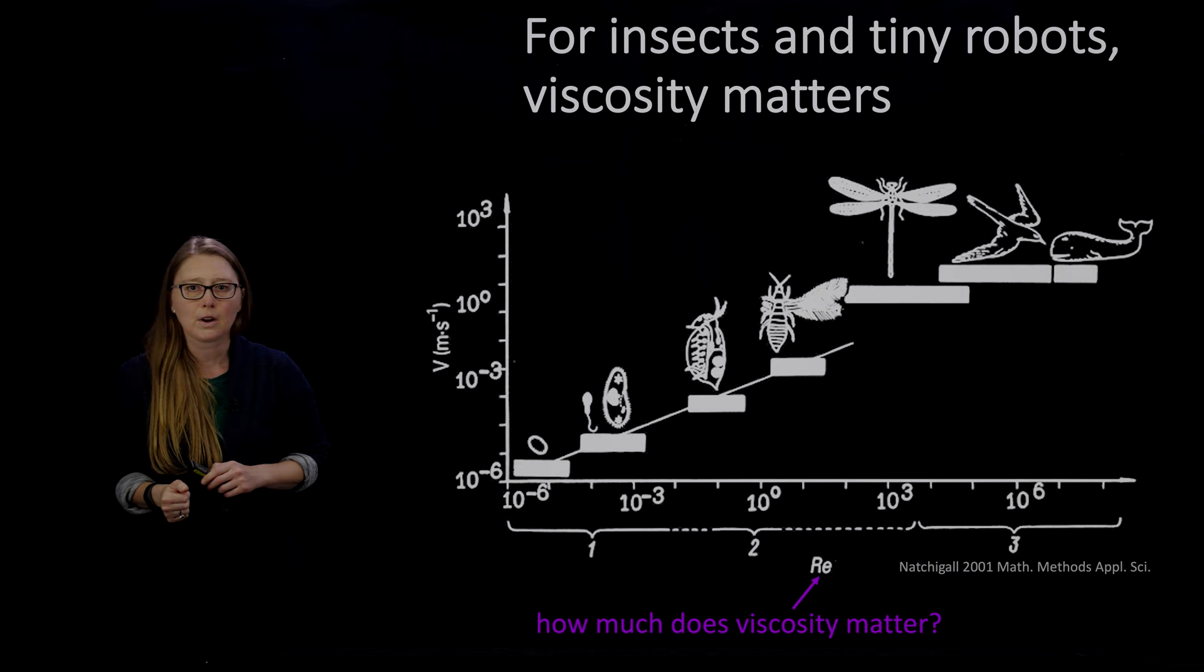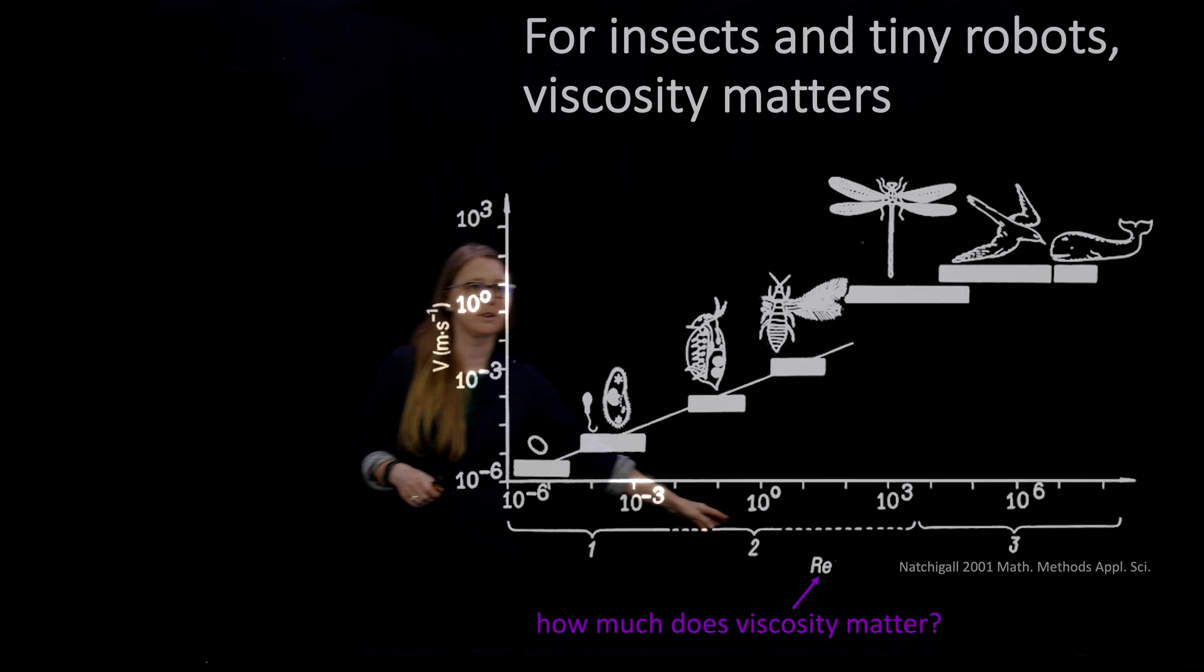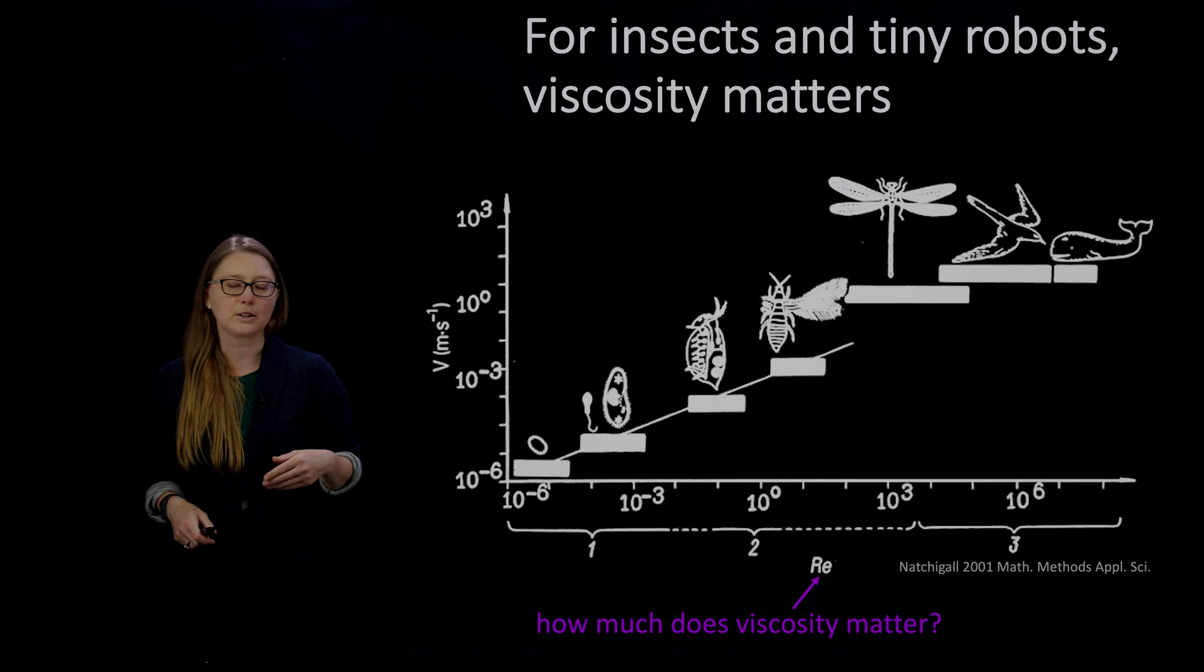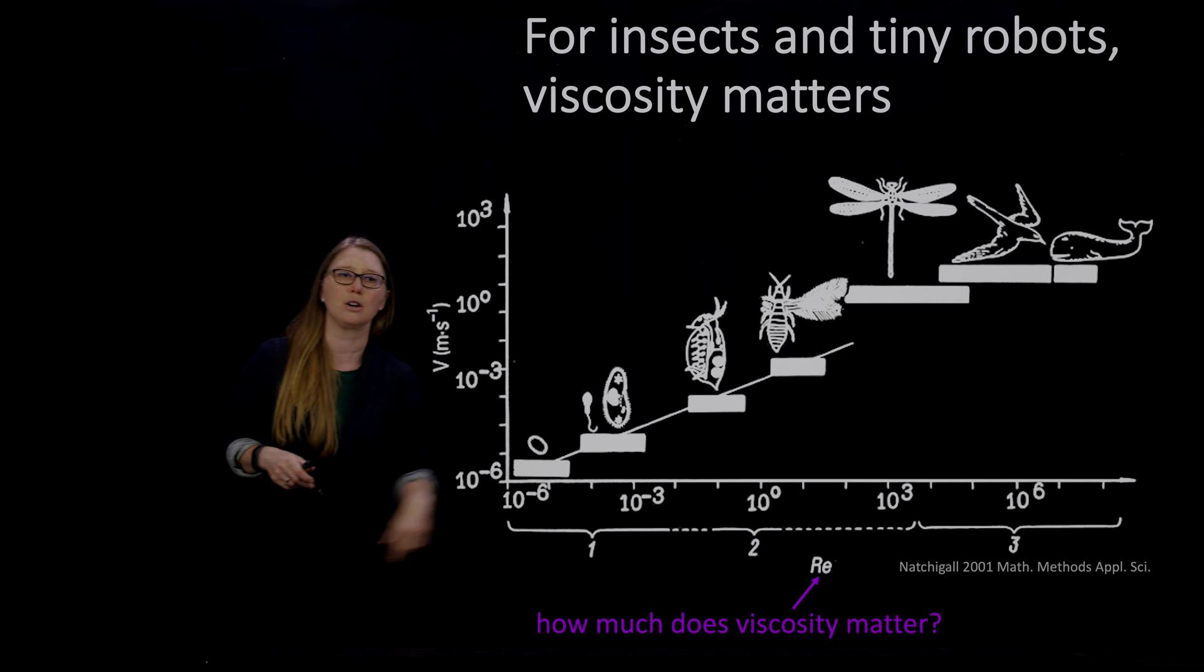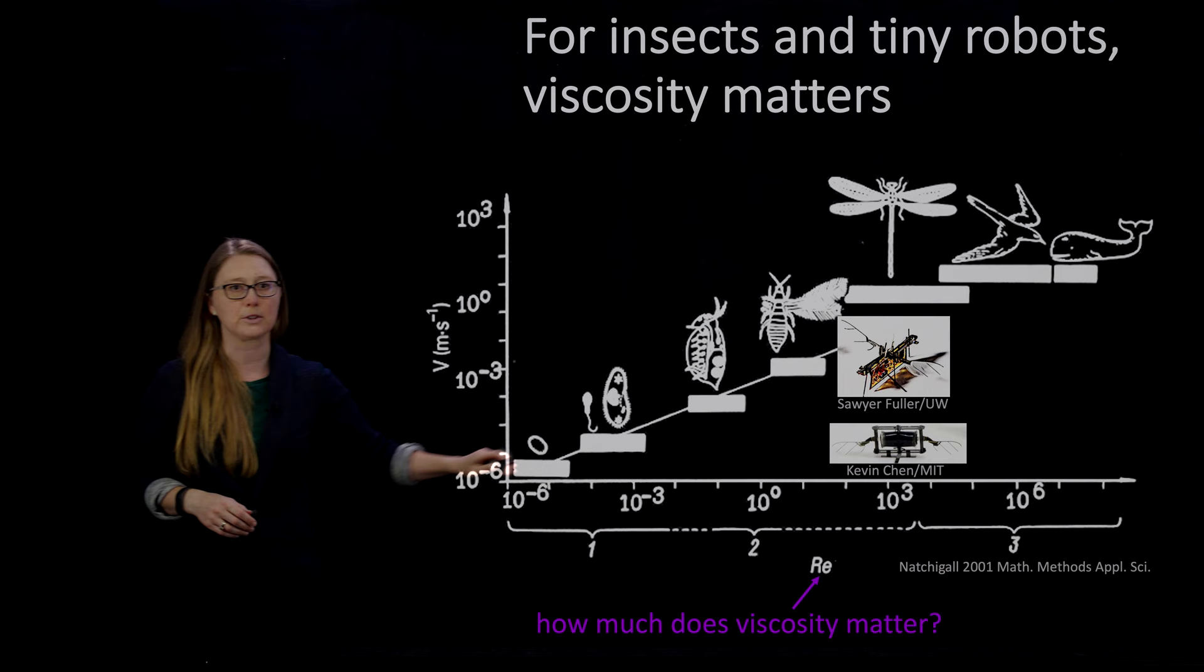So I keep talking about viscosity. Why do I keep talking about viscosity? So this is Reynolds number down on this axis. And it's capturing something approximating to how much do you care about viscosity. And for big and fast things, viscosity might not matter. So that whale might not matter so much. But as you get into the insect scales and smaller, or into the insect robot scales, you do start to care about viscosity. That's what this Reynolds number axis is capturing.